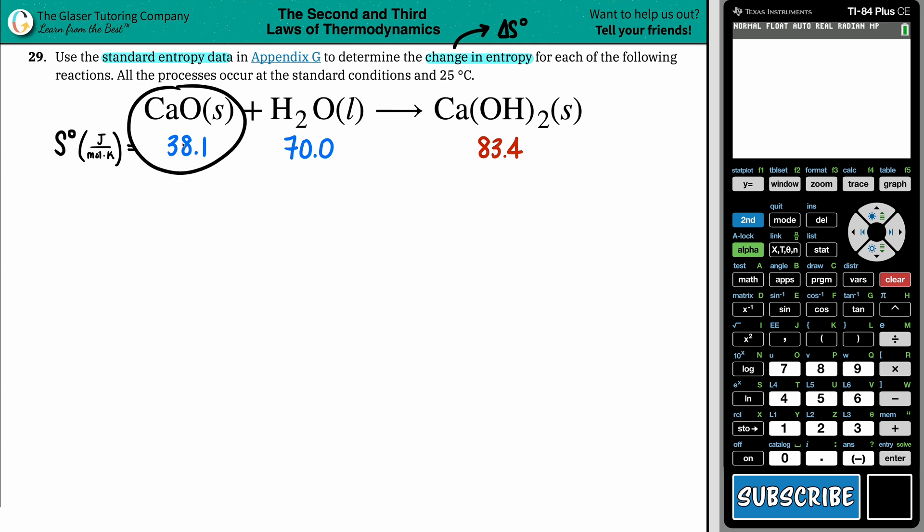Calcium oxide has an entropy value of 38.1 joules per mole times Kelvin. Water has an entropy value of 70. Keep in mind that in this case, they wanted H2O liquid, not the gas one, so just be careful picking out your H2O values. Calcium hydroxide has an entropy value of 83.4.